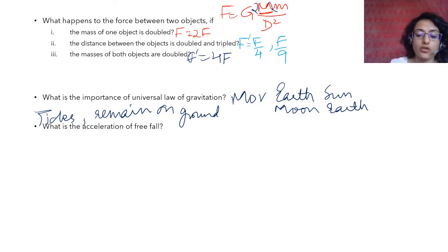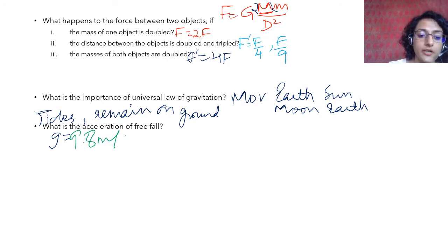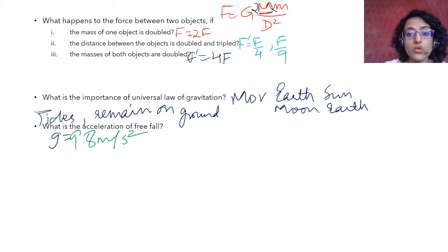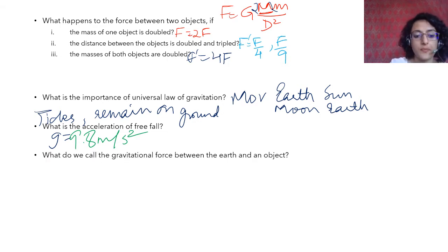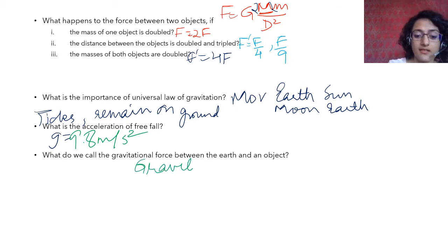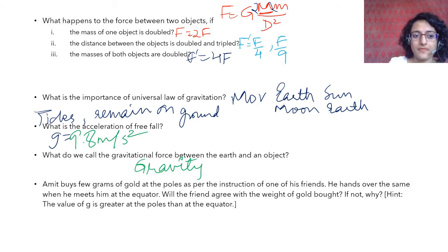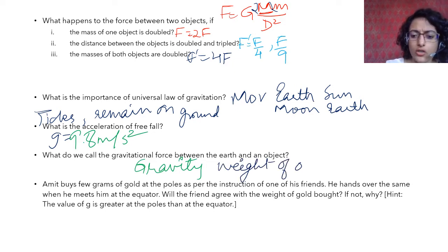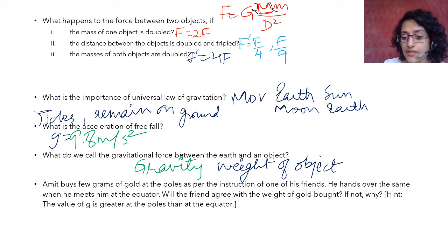What is the acceleration of free fall? It is the acceleration due to gravity — 9.8 m/s² — where no other force acts on the object except gravity. What do we call the gravitational force between earth and an object? It is called the weight of the object — the force with which the earth attracts the object.